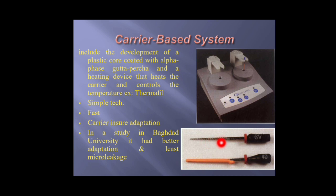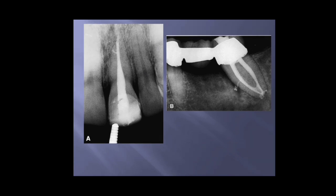Some techniques use soft gutta-percha on a carrier, which can be metal or plastic. An example is the Thermafil technique, which uses the alpha phase of gutta-percha — highly sensitive to heat — heated within special chambers and inserted into the canal. The carrier is then cut using a handpiece. This technique has good adaptation and control of micro-leakage. As seen, soft gutta-percha will also fill lateral canals, accessory canals, and spaces between two canals — all these areas are filled with soft gutta-percha.